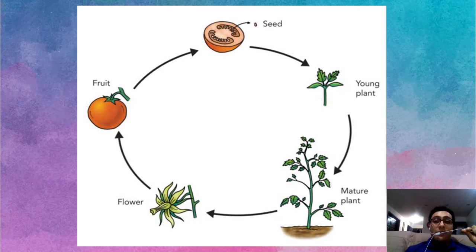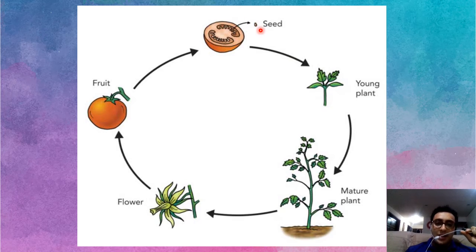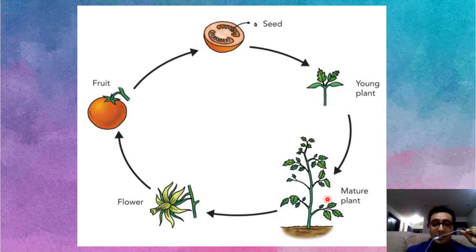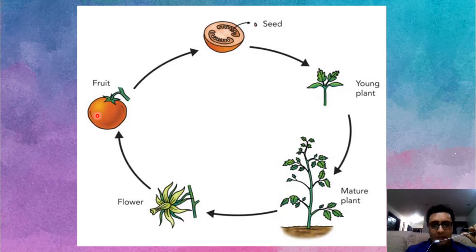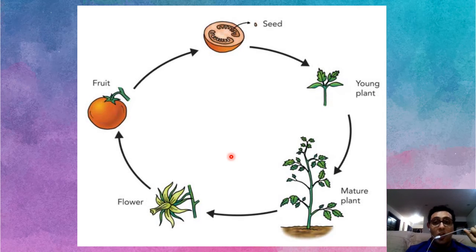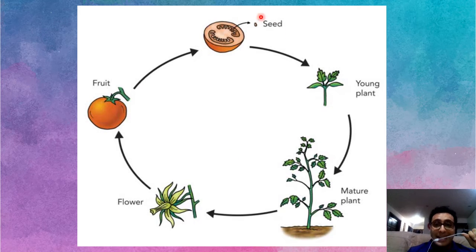Plants also have a life cycle. The seed becomes a young plant, the young plant becomes a mature plant, the mature plant gives us a flower, and from the flower we get fruit. Inside the fruit, there is a seed. You can write the life cycle of any animal or living creature you like, but don't forget the arrows and the names.